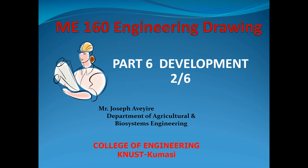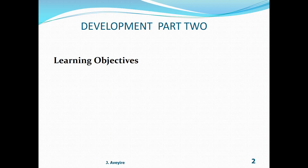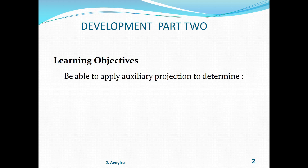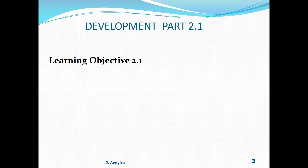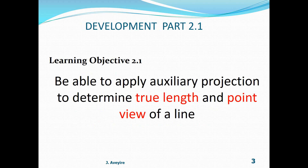Welcome to MU160 Engineering Drawing, Part 6, Development Section 2. Learning objectives: to be able to apply auxiliary projections to determine true length and point view of a line, determine true shape and edge view of a plane, and determine the dihedral angle between two planes. Learning objective 2.1: be able to apply auxiliary projection.